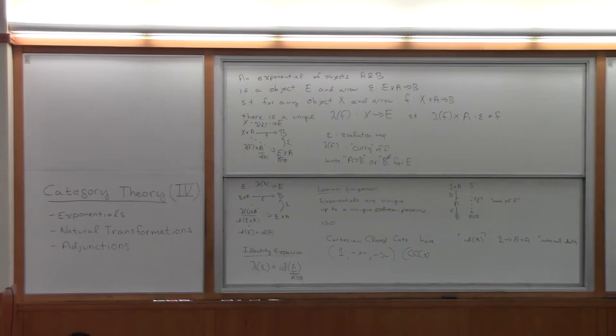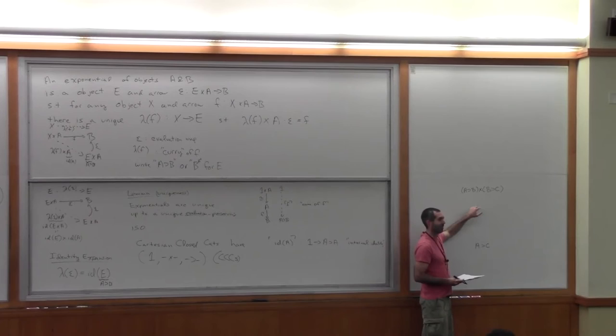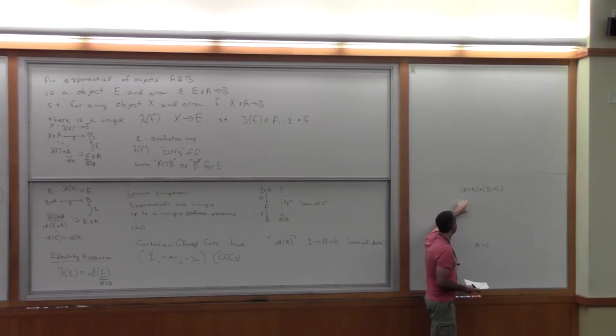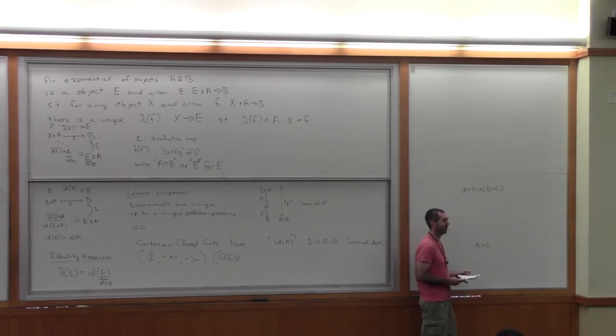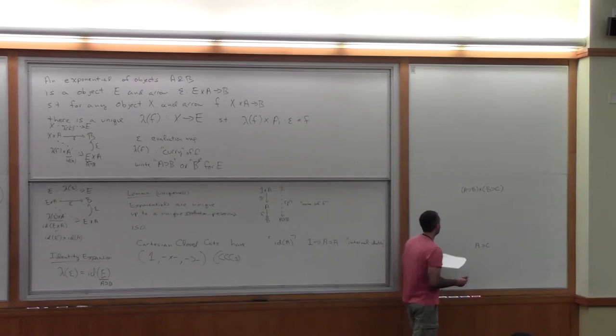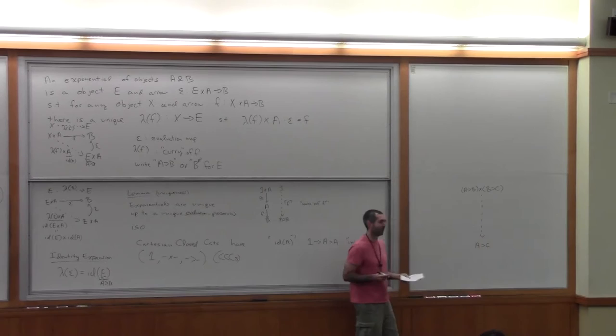The exponentials are sometimes called internal homs of the category, and this gives us an internal identity. We can also have internal composition: we want a map from the exponential B-to-C producted with the exponential A-to-B to the exponential A-to-C. This is the internal version of composition — you give me two arrows, one from A to B, one from B to C, and I give you back an arrow from A to C.